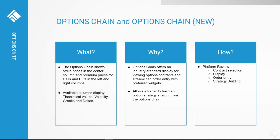TT's Options Chain gives options traders the ability to view options contracts in an industry-standard display and the power to quickly enter orders with their preference of order entry widgets. Users can add and adjust option-specific data columns to display options-relevant data. Users can also quickly select option legs to build strategies directly from the Options Chain and send to the Strategy Creation widget, saving users clicks and time.